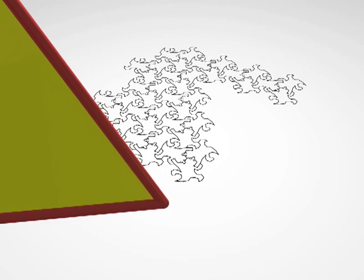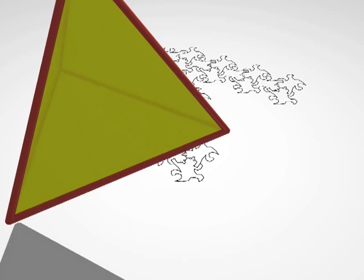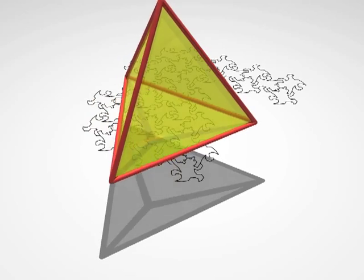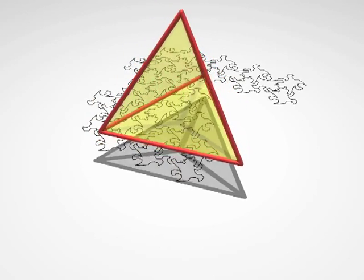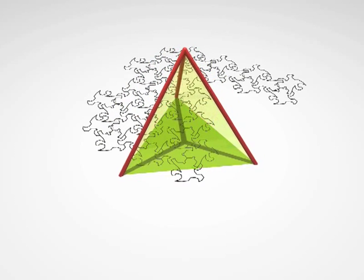Here, for example, is a tetrahedron with its four faces passing through the lizard's plane. The flat creatures see a green triangle appear suddenly, then gradually shrink away.